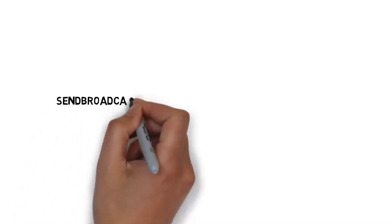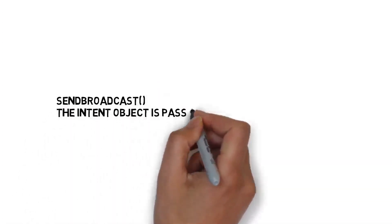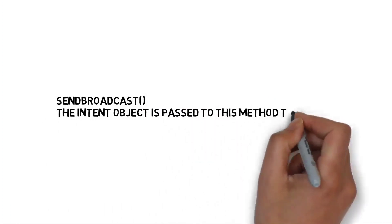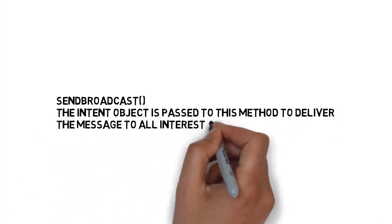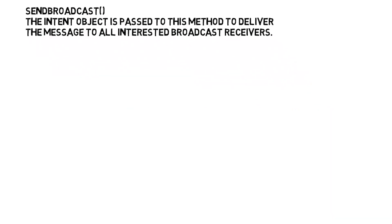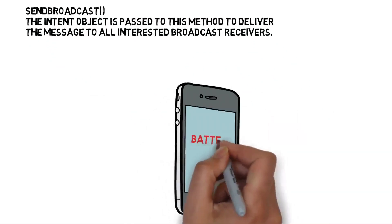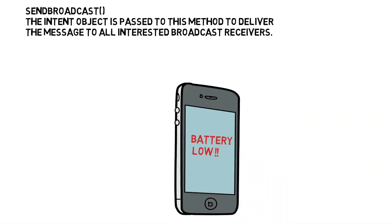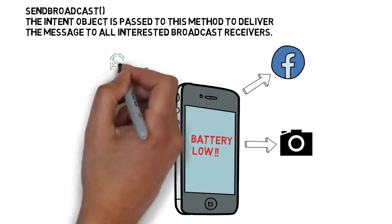Intent is also used for broadcast messages. For example, consider the system — when the battery is very low, the operating system will send a battery low message to all interested applications. An intent object is used to send these broadcast messages.